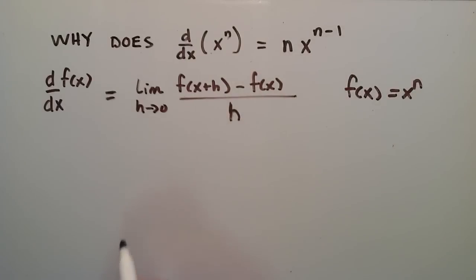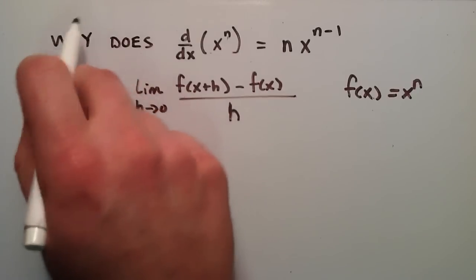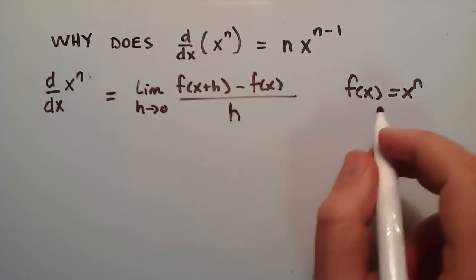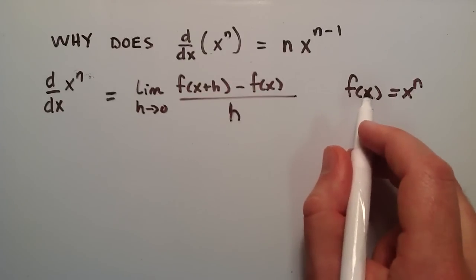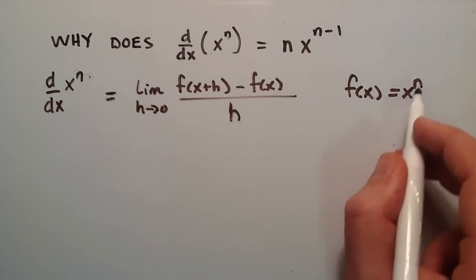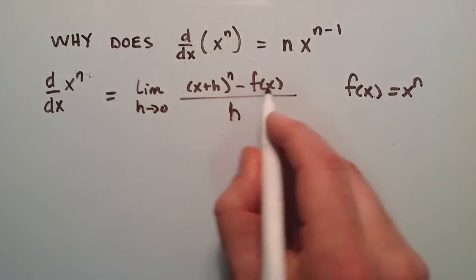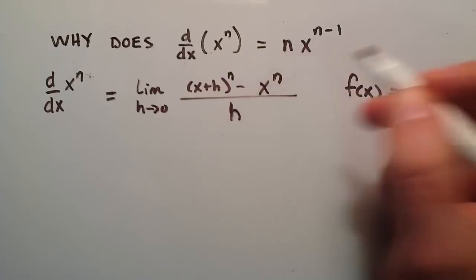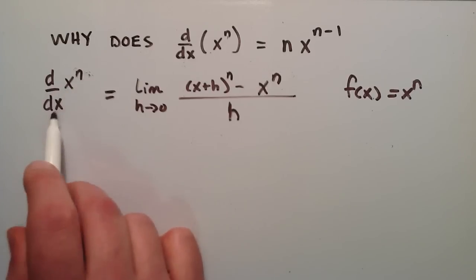Basically what we're going to do is replace f of x with x to the n. So f of x becomes x to the n. And f of x plus h — we find that by just changing the x's to x plus h, so f of x plus h is equal to x plus h to the n. So we change that term to x plus h to the n, and then minus f of x, which was x to the n. So now if we can figure out what this limit is, then we've found the derivative of x to the n with respect to x.